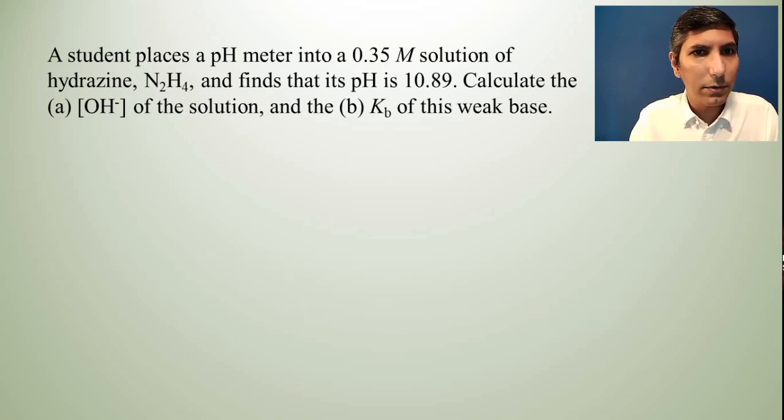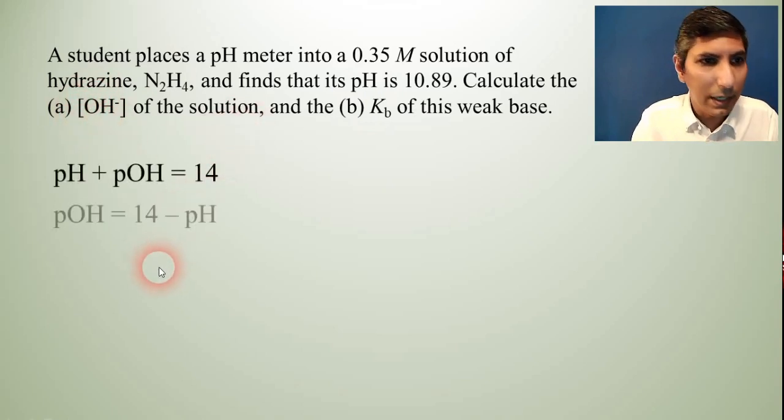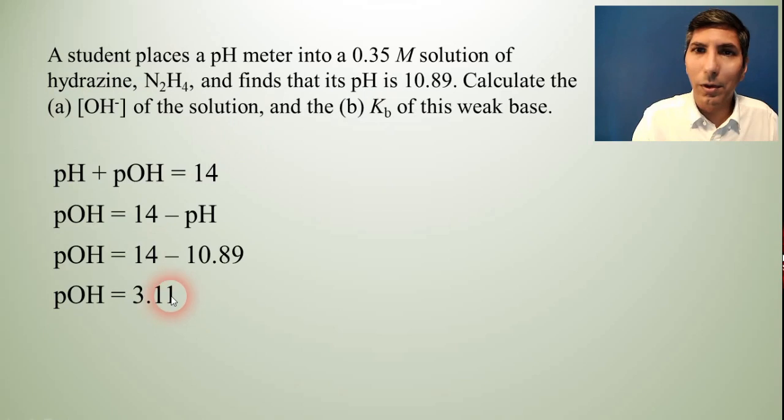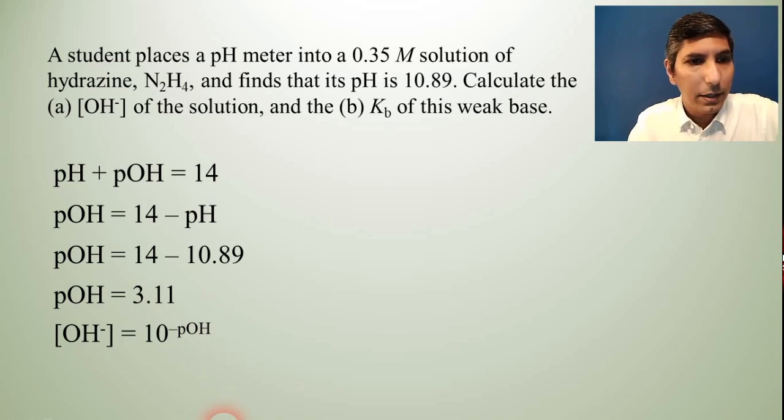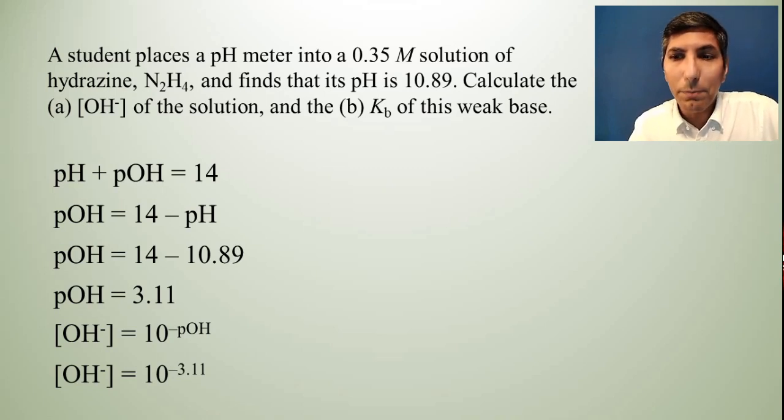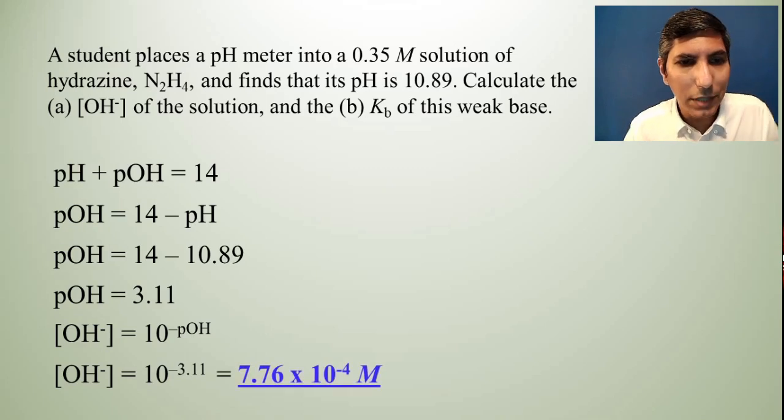So we're going to start first of all by realizing that if we have the pH we really need to have the pOH in order to find the hydroxide. So let's just subtract this from 14 and get this into pOH. So it's 3.11. So now if we know the pOH hydroxide is just 10^-3.11. So that's just a simple calculation on your scientific calculator. 10 to the negative 3.11 power. And so your hydroxide concentration is equal to 7.76 × 10^-4 moles per liter. So that's the answer to part A.